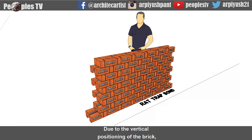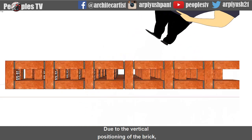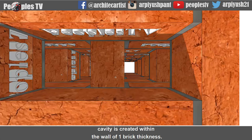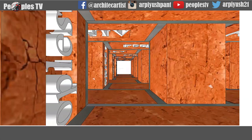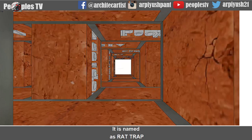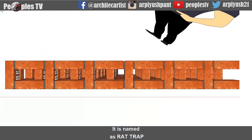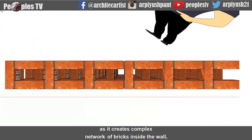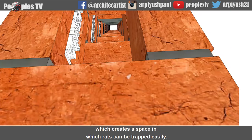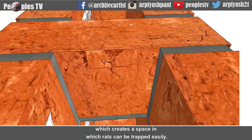Due to the vertical positioning of the brick, a cavity is created within the wall of one brick thickness. It is named rat trap because it creates a complex network of bricks inside the wall, which creates a space in which rats can be trapped easily.